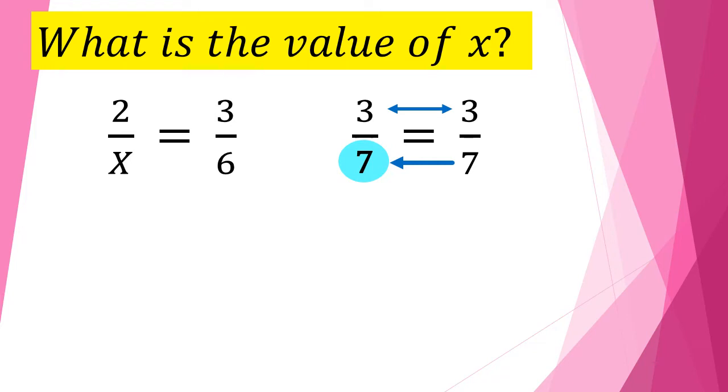So go back to our original equation. If you notice, the numerators are not equal. The left fraction is 2 and the right fraction is 3. So we cannot use the same process. Some use decimal form. They convert 3 over 6 into decimal form and that is 0.5. On the left fraction, 2 over x. So what is the value of x so that 2 divided by x equals 0.5 also? So this is how to compute.